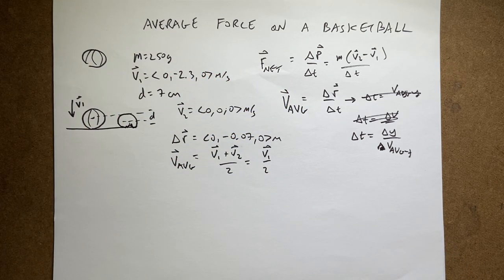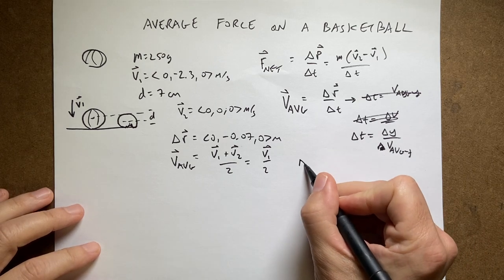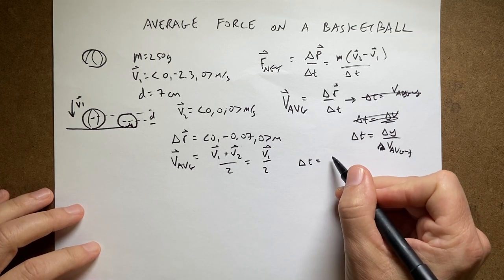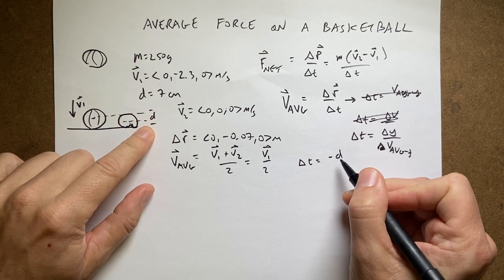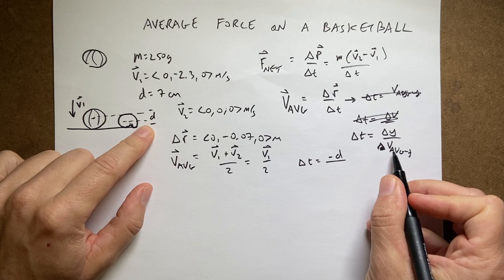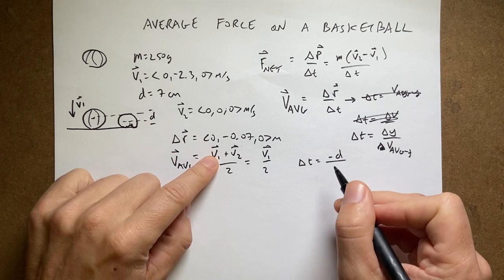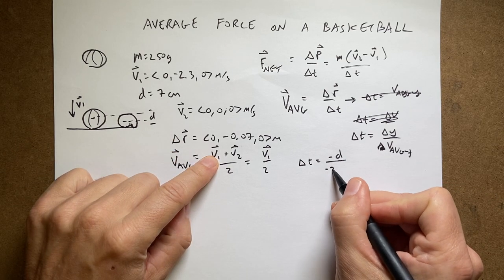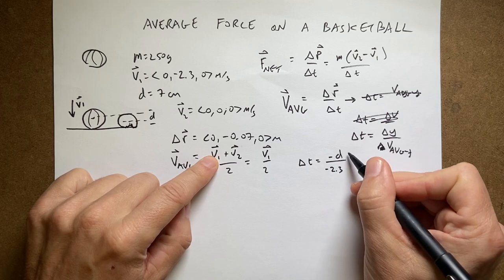And in the x direction and the y direction there's no change in velocity, so it's boring. So I can write this as delta t equals delta y, which is just going to be negative d, that's how far it went in the y direction, divided by the average velocity which is going to be v1 which is negative 2.3 divided by 2.